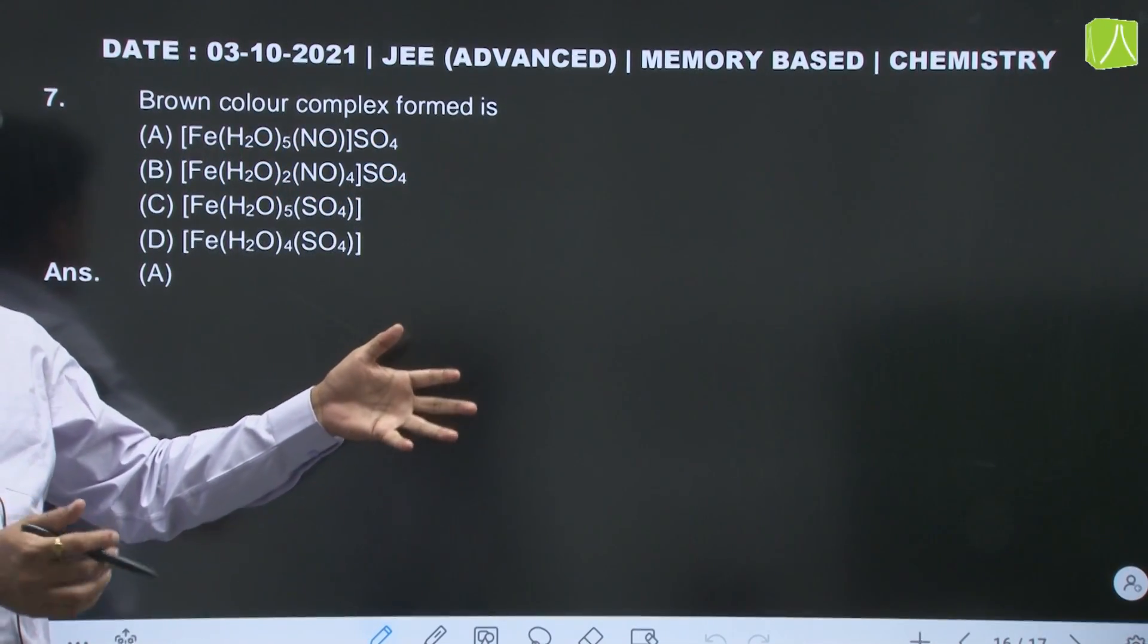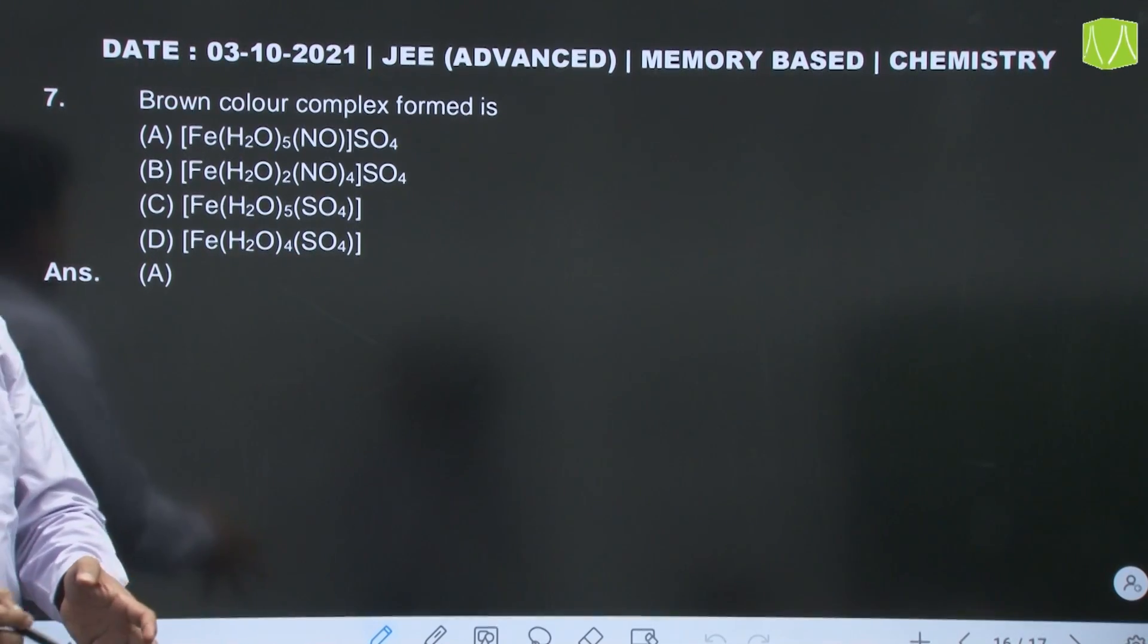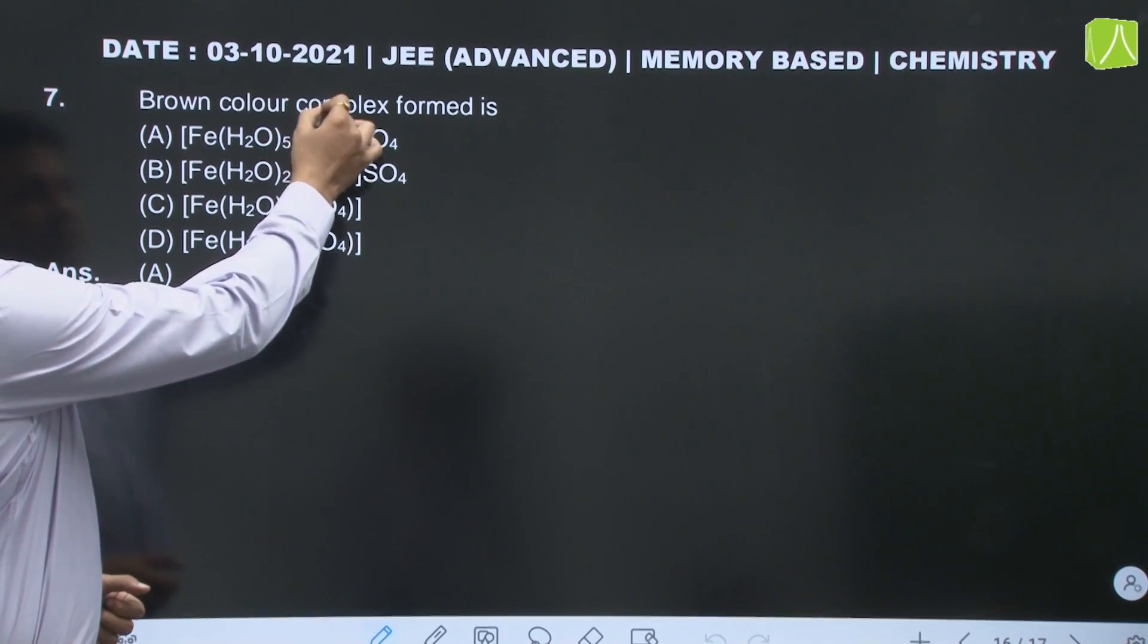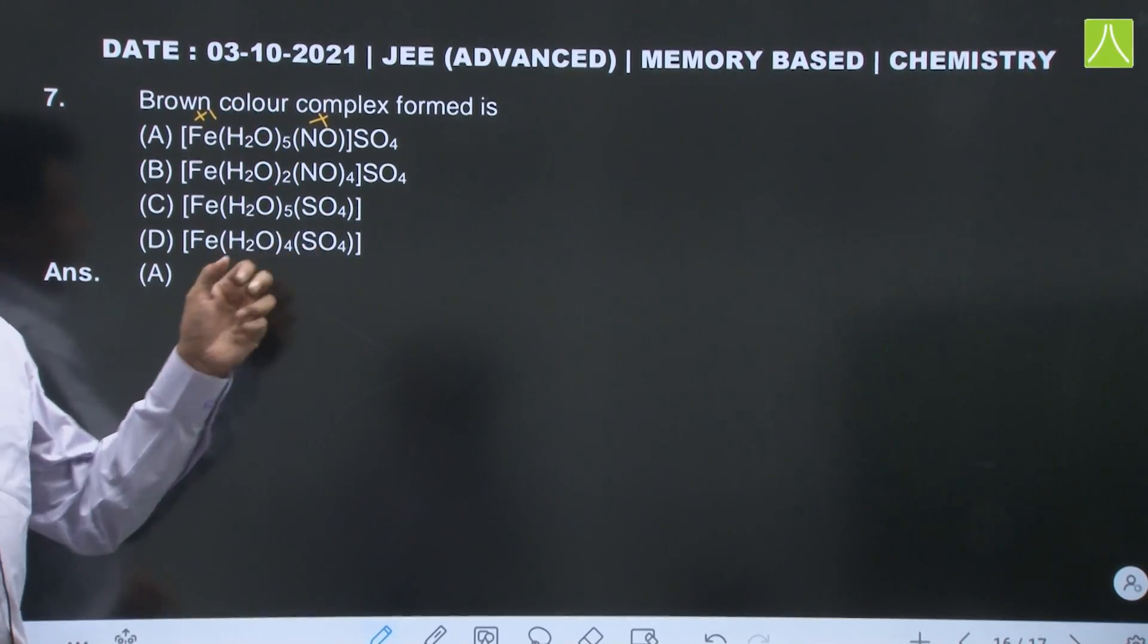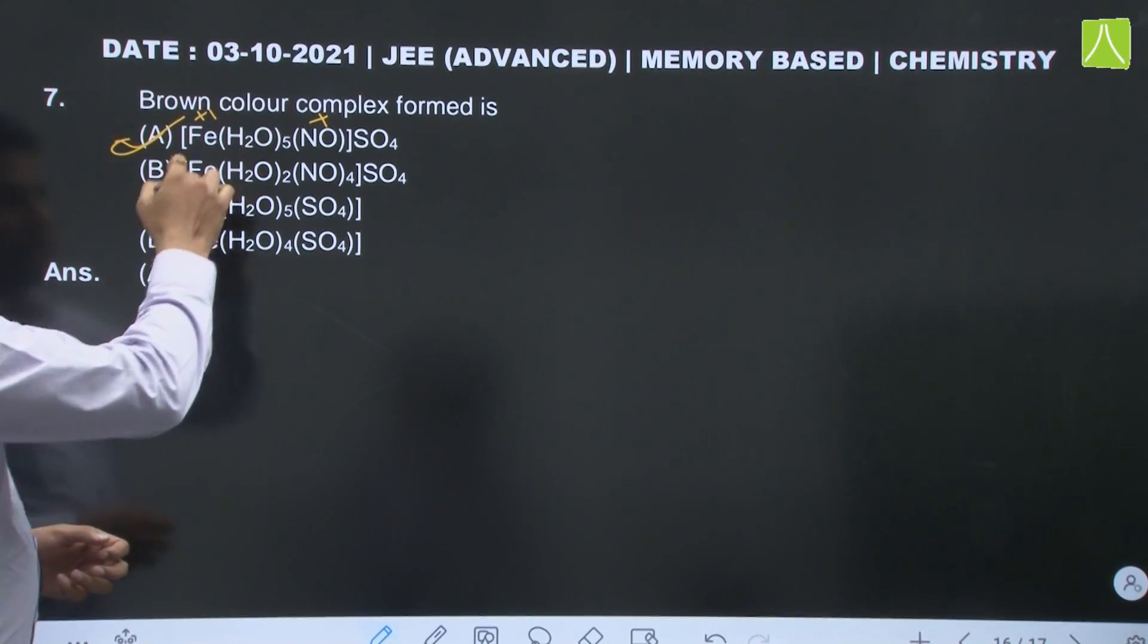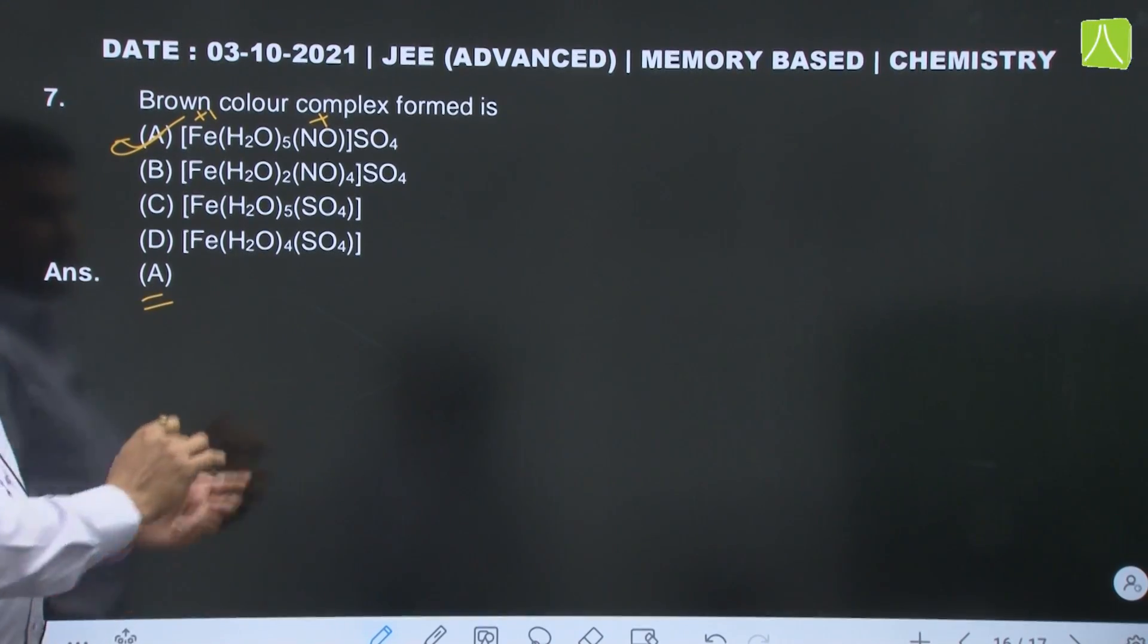We all know that brown ring complex, the formula for brown ring complex in which NO is present as NO+. So this is the brown ring complex in which iron is found to be in +1 oxidation number. It is a very important complex, very important compound - brown ring complex or brown ring compound.